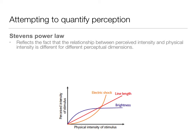While Fechner said it's a one-to-one relationship — you put in two light bulbs and it's going to be twice as bright — Stevens says that's not necessarily the case. It depends on what kind of perceptual dimension we're talking about. Line length is a really one-to-one, easy one: you double the line, it looks twice as long, as you see here in this graph. Brightness, however, has a very different shape when measuring the relationship between perceived and physical brightness. The same is true with electric shock — it's a very big difference in how that relationship looks.